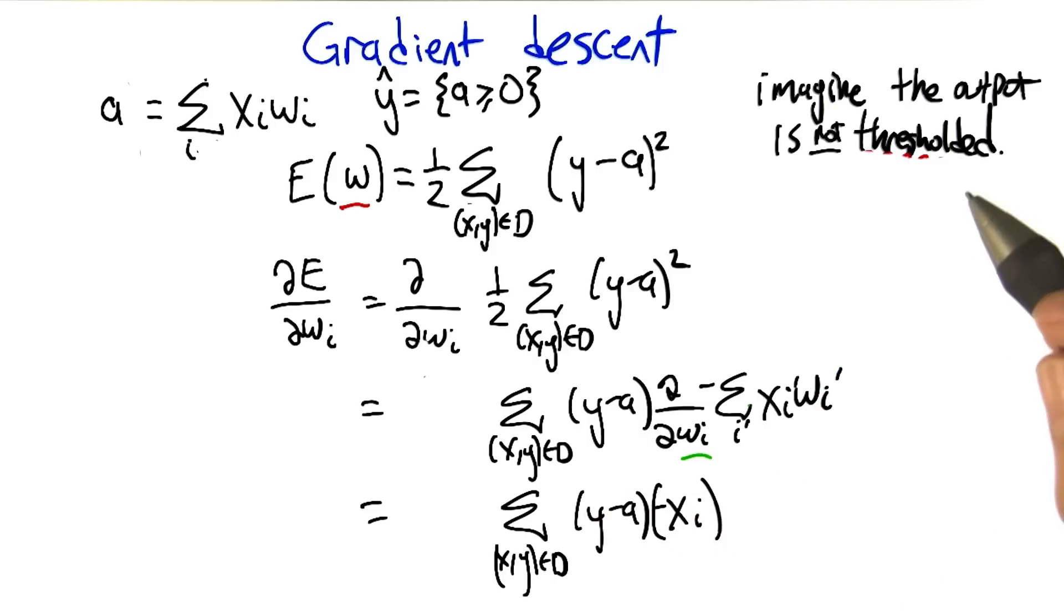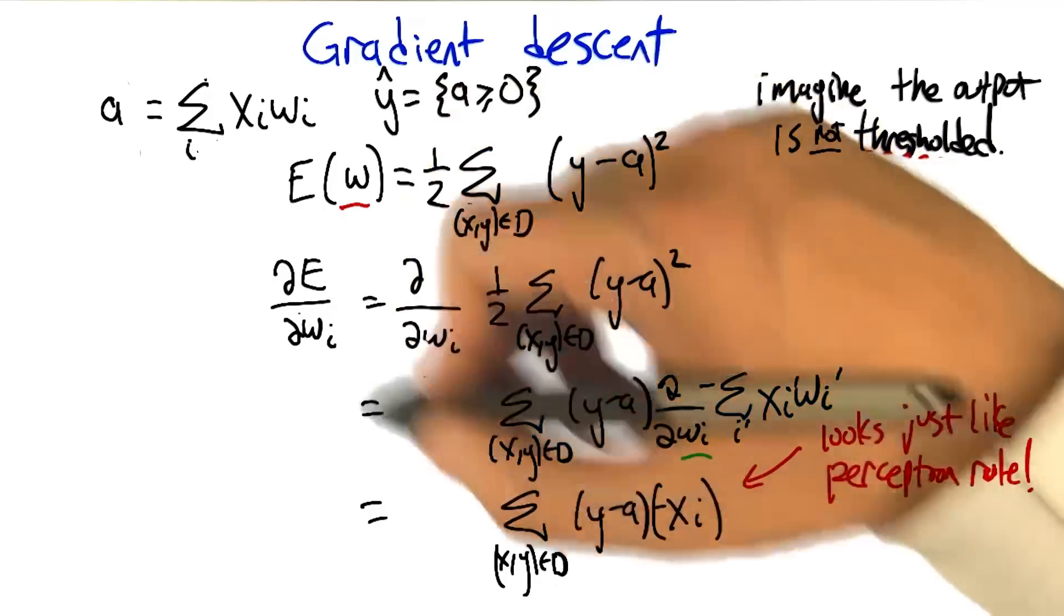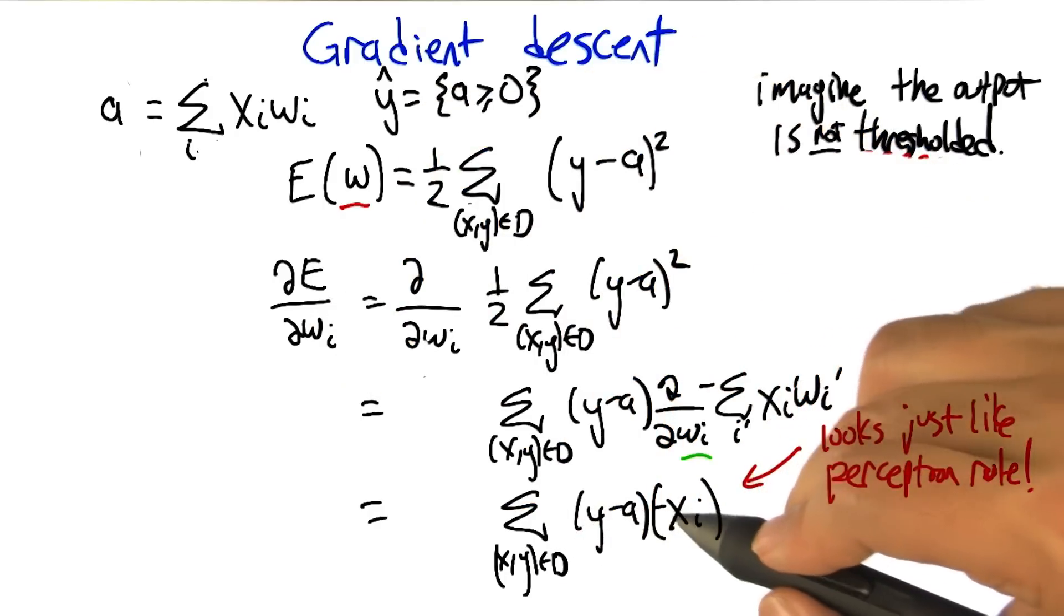Now, that looks exactly like, or almost exactly like, the rule that we used with perceptrons before. It does indeed. What's the difference? Well, let's actually write this down. This is now just the derivative, but let's actually write down what our weight update is going to be, because we're going to take a little step in the direction of this derivative and it's going to involve a learning rate.